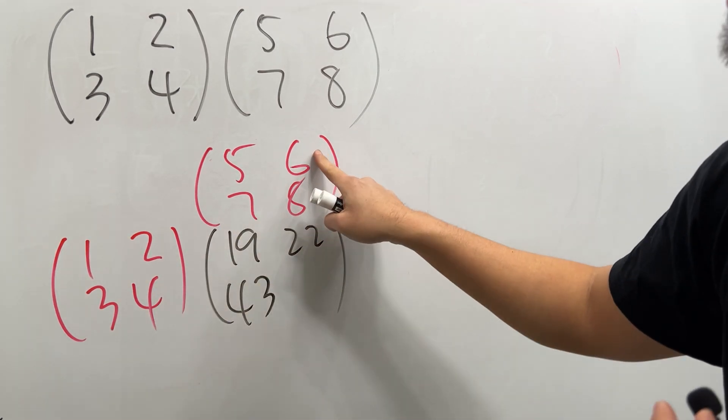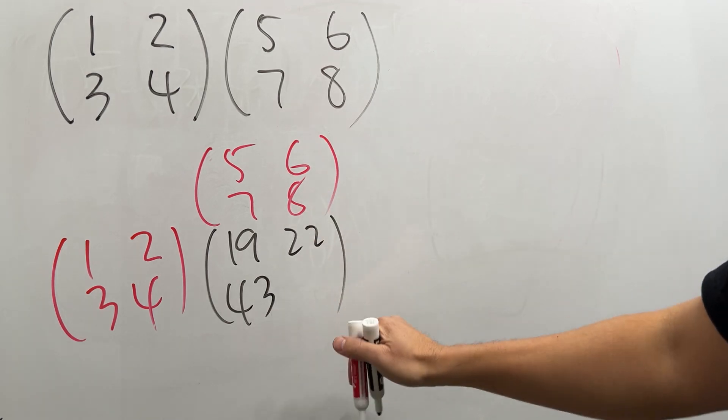And lastly, this times this is 18, plus this times this is 32. All together you get 50.